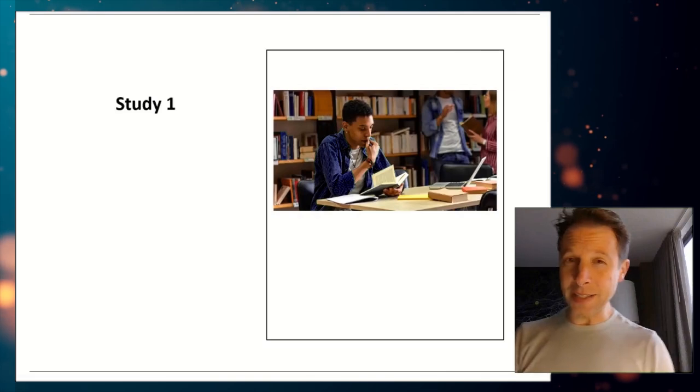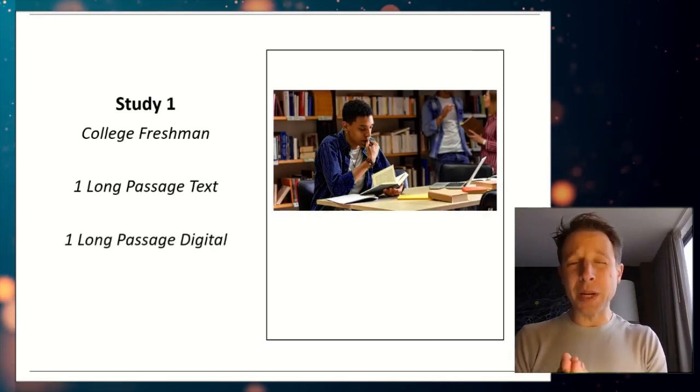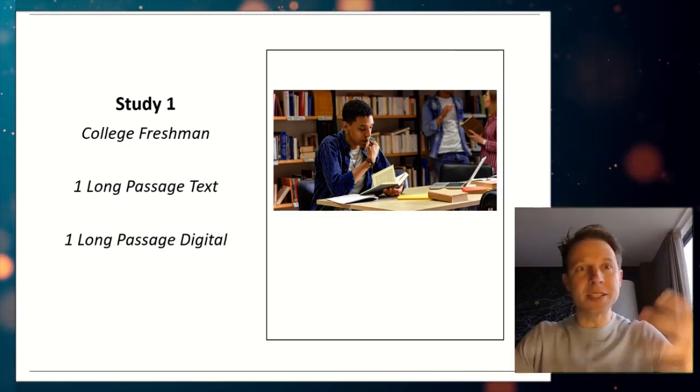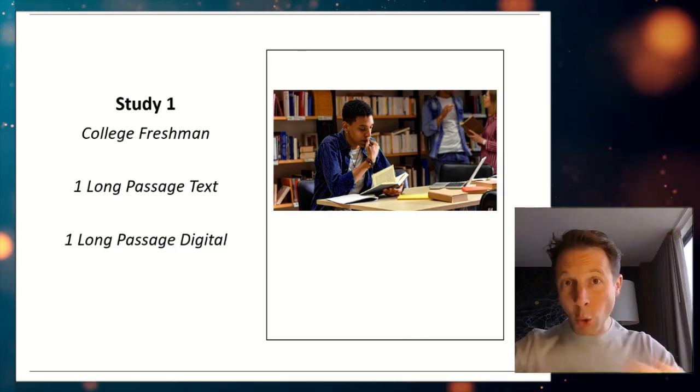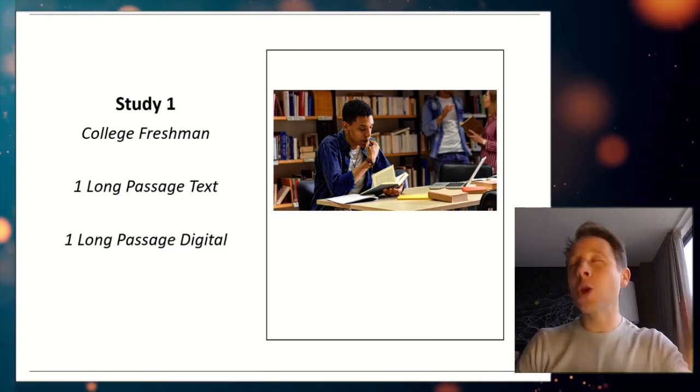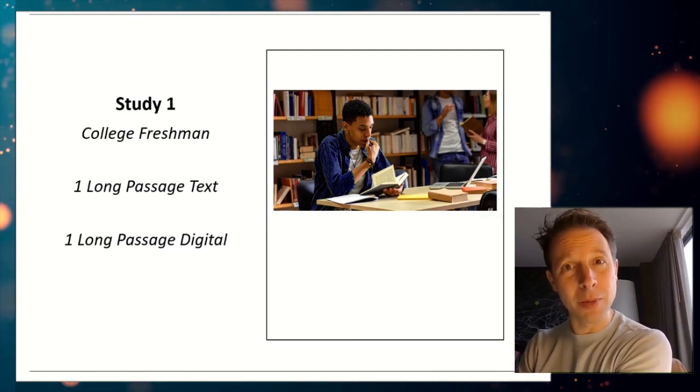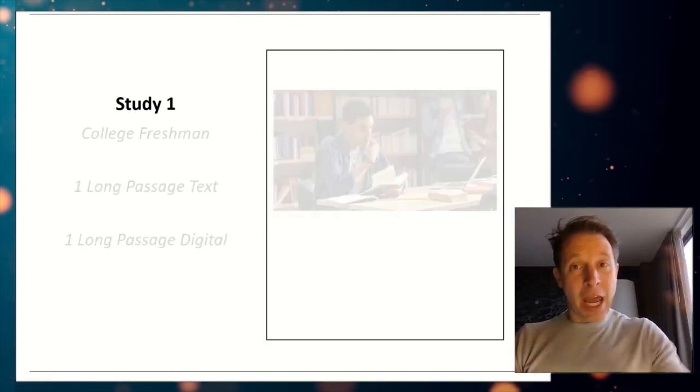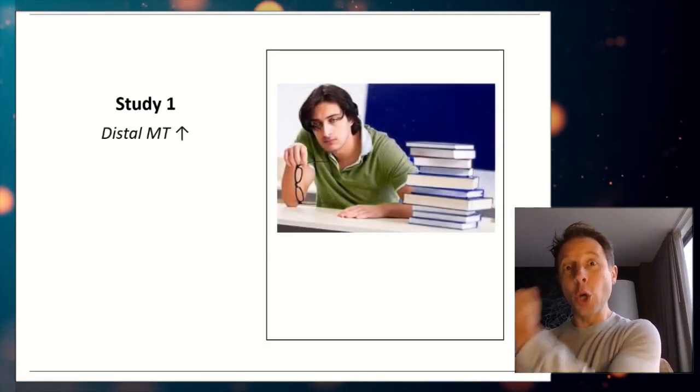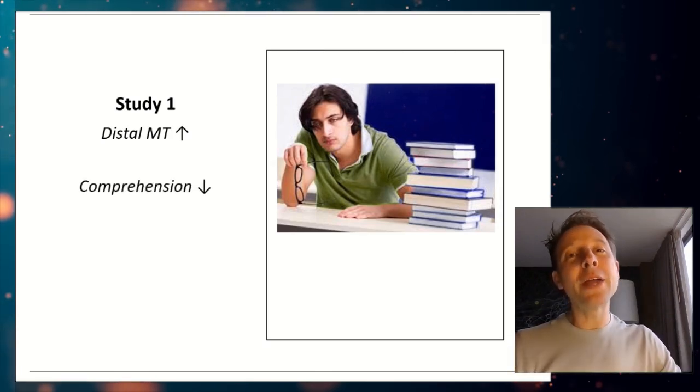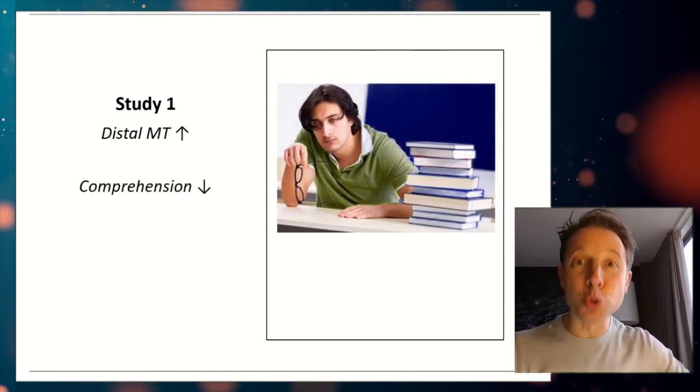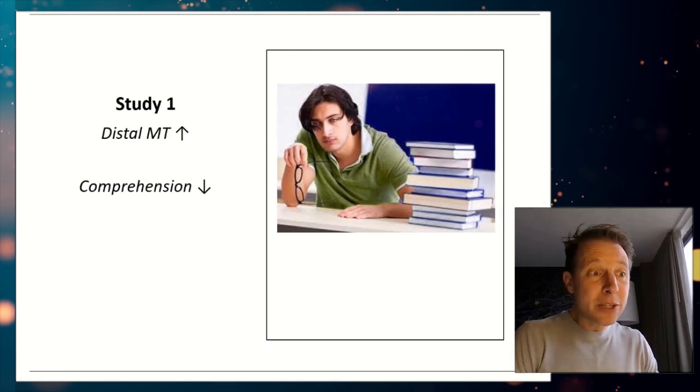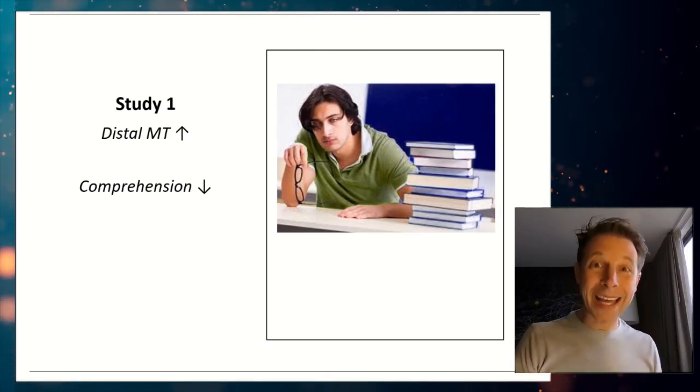So these researchers did three studies. In study one, these researchers took a look at college freshmen and they had these freshmen read one long passage hard copy and one long passage digital to see, is there a difference? Now remember, these people were only reading, no multitasking during reading, and they correlated this with their behaviors of multitasking outside of the classroom. So through following them in questionnaires, they said, how often do you multitask while reading in your real life? And what did they find? They found that as distal multitasking goes up outside of the classroom, comprehension on both hard copy and digital text drops within the classroom, even though they weren't directly multitasking while reading. So we see that external habits can bleed into and start to impact learning performance within a classroom setting.